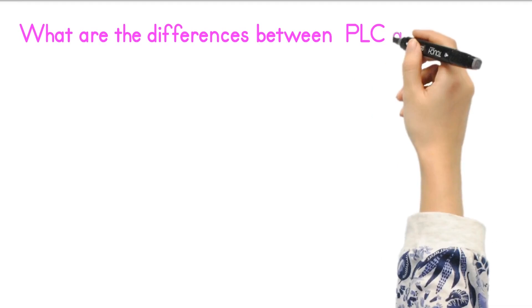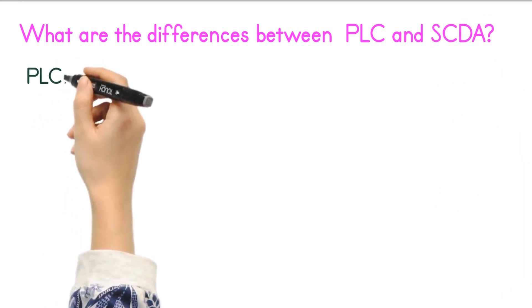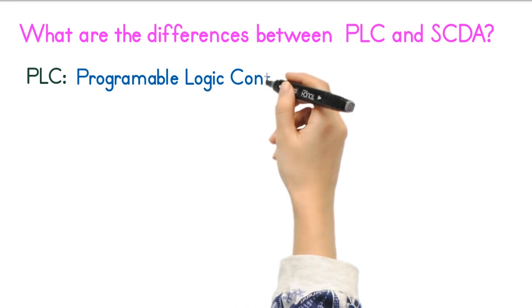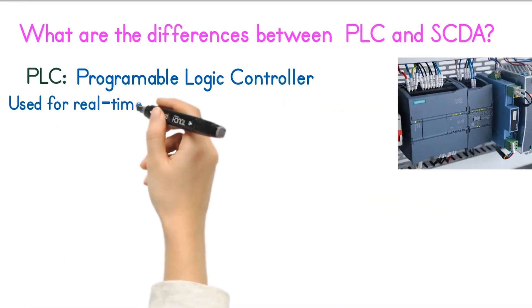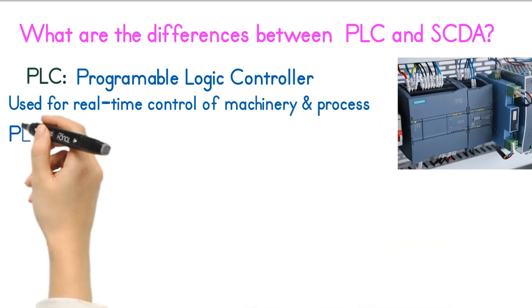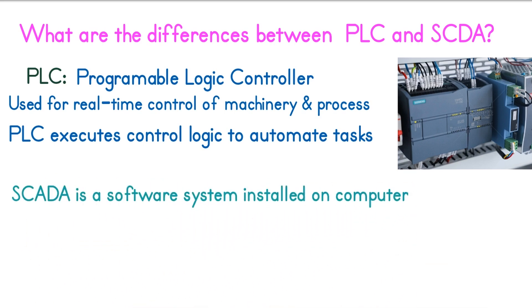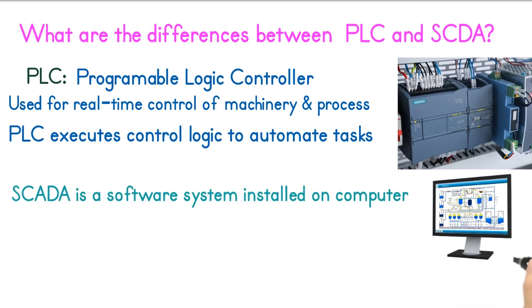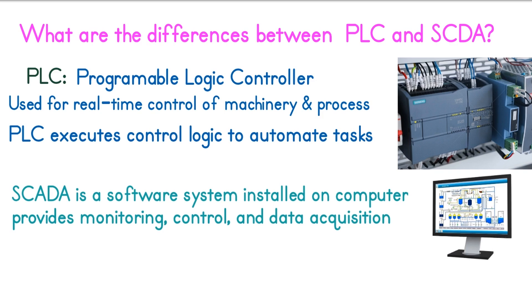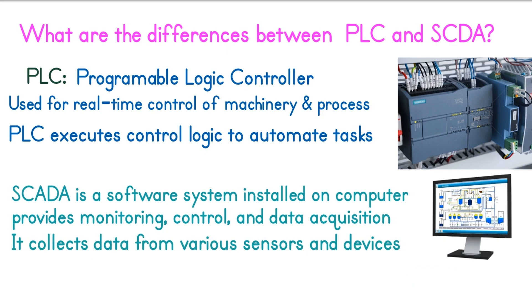What are the differences between PLC and SCADA? PLC stands for Programmable Logic Controller. It is a hardware device used for real-time control of machinery and processes. It executes control logic to automate tasks such as turning on or off motors, controlling valves, and managing other equipment. SCADA is a software system installed on a computer or HMI that provides monitoring, control, and data acquisition capabilities for industrial processes. It collects data from various sensors and devices, including PLCs, and presents it to operators in a user-friendly interface.